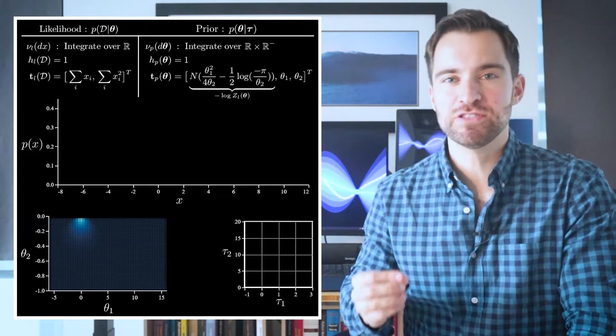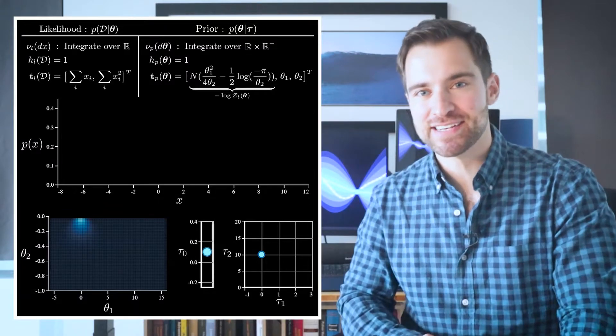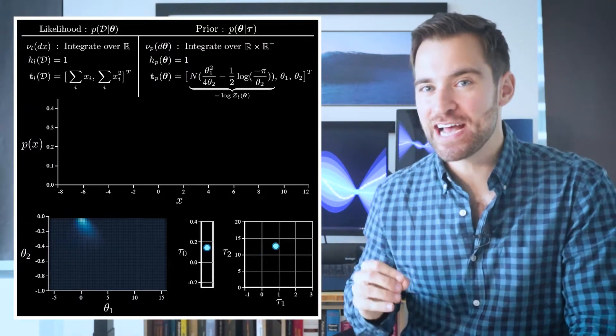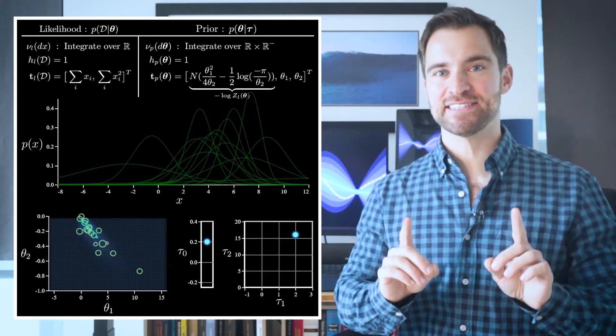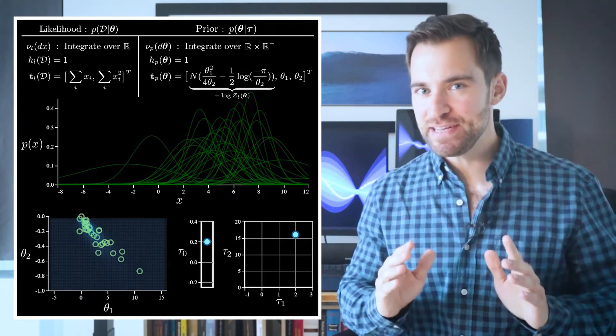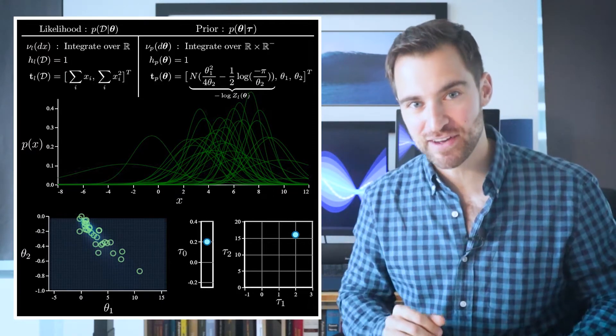To represent τ, I'm going to plot τ1 and τ2 in this space as a point. I'll represent τ0 with its own axis. Now, if we move the τ vector, we notice the distribution over θ moves. And this sets us up for the punchline. That is, conjugacy means conditioning on the data will reduce to some shifting of this τ vector.